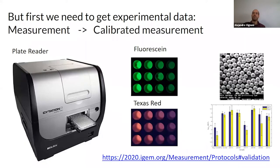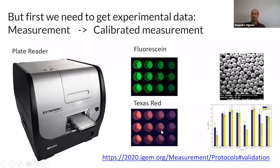To make sense of what we will do, we want to have calibrated measurements. For example, in a plate reader we would like to calibrate with a reference for the fluorescence we want — fluorescein for GFP. We are starting in the measurement committee to have protocols and validations for Texas Red, which will be useful for RFP.